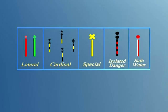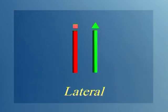Now let us look at these five types of marks. There are two lateral marks, one red, the other green.